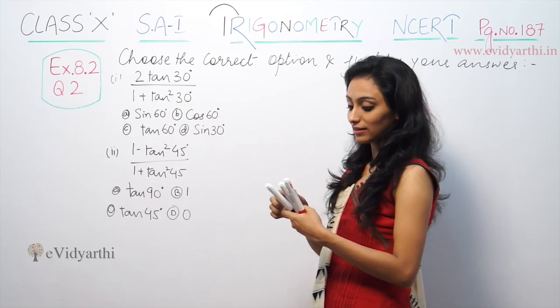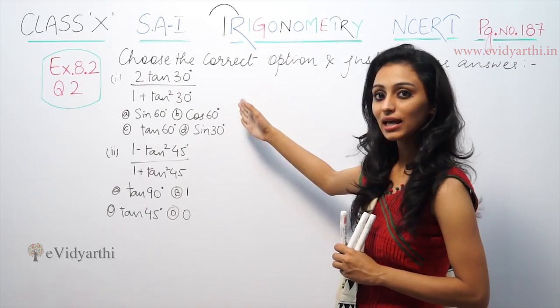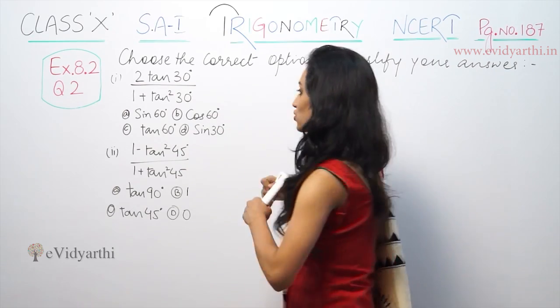So, 2 tan 30 - the table, this is where your values are. We will substitute the values from here and then we will see which option it matches.